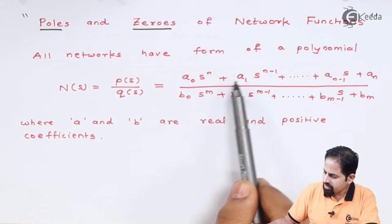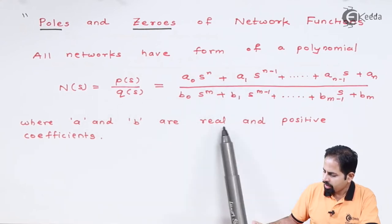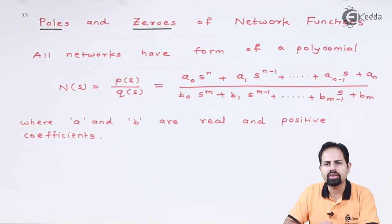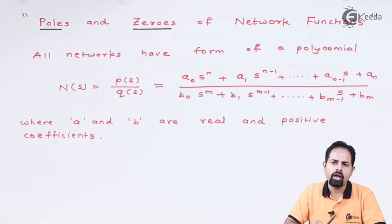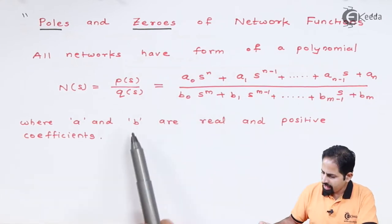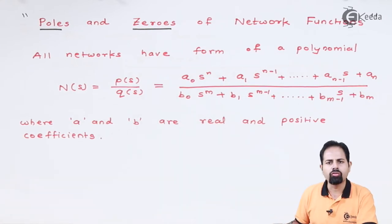Important thing is, this a and b they are real and positive coefficients. We have seen that for passive networks, that means for the parameters like inductor, capacitor and resistance, the networks which are called passive network always these coefficients are real and positive. This we have been seeing from Laplace or even before Laplace when we applied one-dimensional or two-dimensional differential equations.